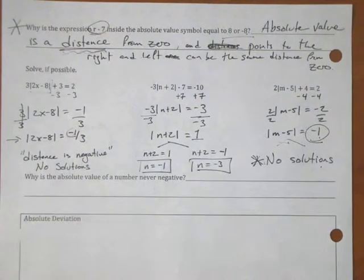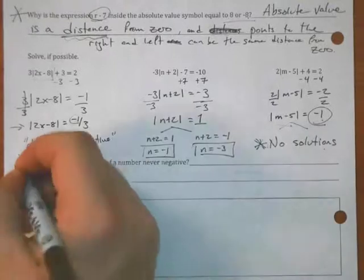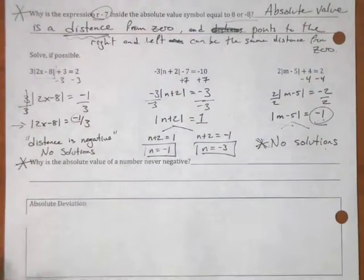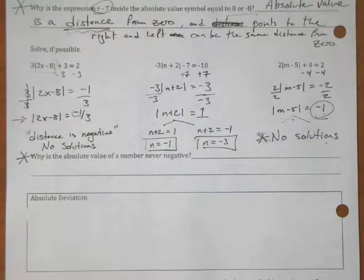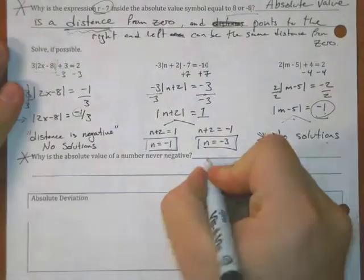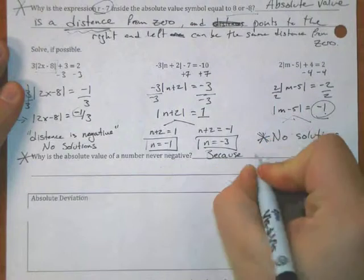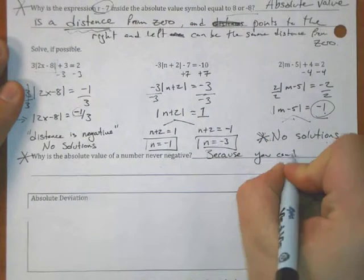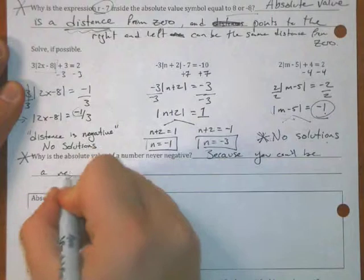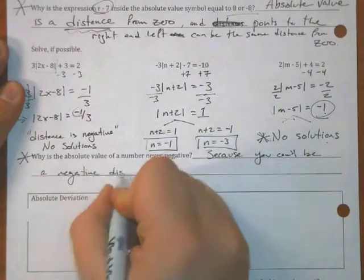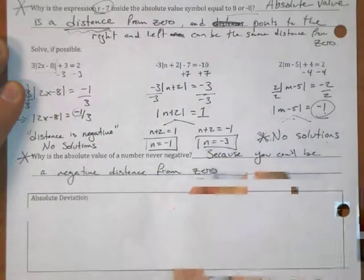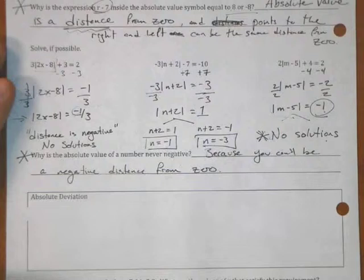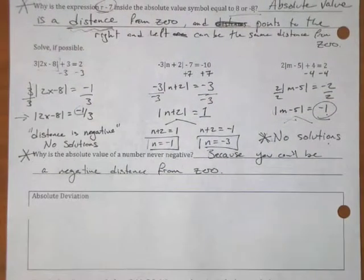Okay? So in your own words, please write down, answer this question. Why is the absolute value of a number never negative? In your own words, jot it down. Because, I couldn't have said it any better. Because you can't be a negative distance from 0. I could not have said that any better myself.